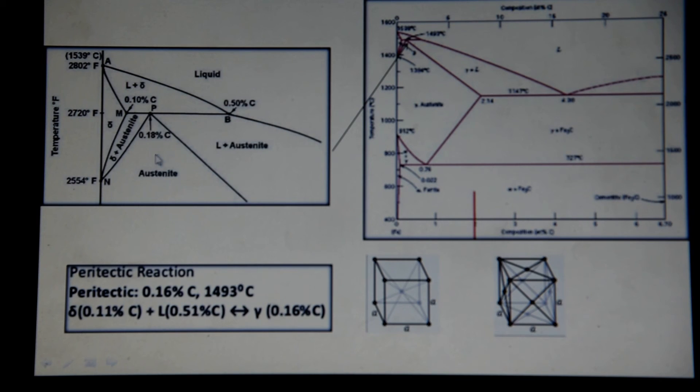This delta phase is body centered cubic plus the liquid, which is this region, and at 0.16 weight percent of carbon and 1,493 degrees Celsius, you would have that conversion then directly into austenite, and that's the peritectic transformation.